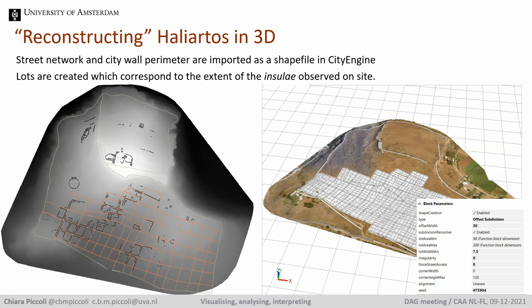As to the practical workflow, I imported the street network and city wall perimeter as a shapefile in CityEngine. Since the software allows seamless integration with GIS, the coordinates and attributes of shapefiles are maintained upon import. By interpolating the street network, lots are created corresponding to the extent of the insulae observed on site. The lots are then internally subdivided according to specific parameters representing the situation observed in the few insulae that are better preserved than the rest of the urban area.